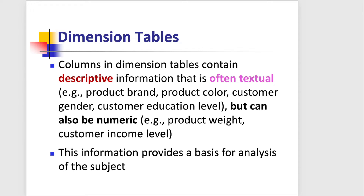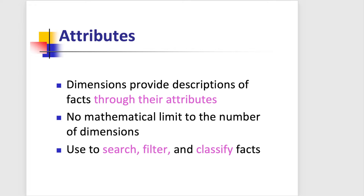For example, a total and average sale can be measured per product brand, per customer gender, and for many other dimension attributes. The attributes are the same concept as in relational databases — they provide additional information to the dimension. For example, if one of our dimensions is product, the attributes could be product ID, product name, price, etc. Or if the dimension is customer, the attributes could be customer ID, customer name, or address.